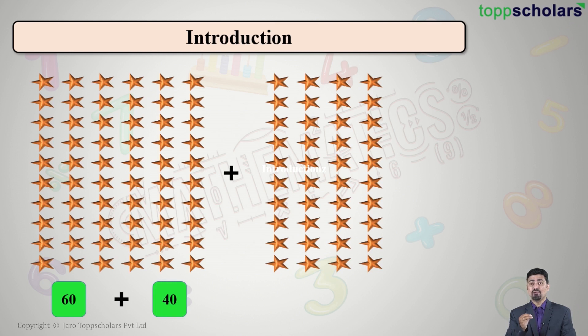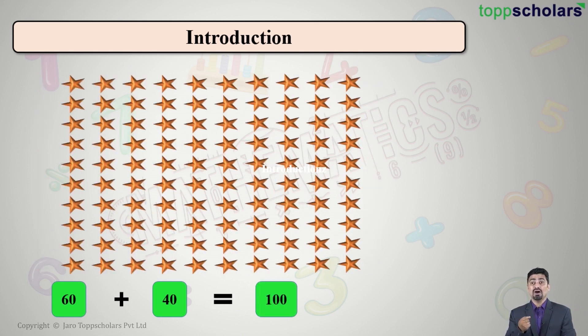How many total number of stars will be there now? 60 plus 40, what does it give us? It gives me 100, so I will have now 100 stars. Wasn't it simple? We have done this type of addition, it is very simple addition, right? So similarly, can we also add time?